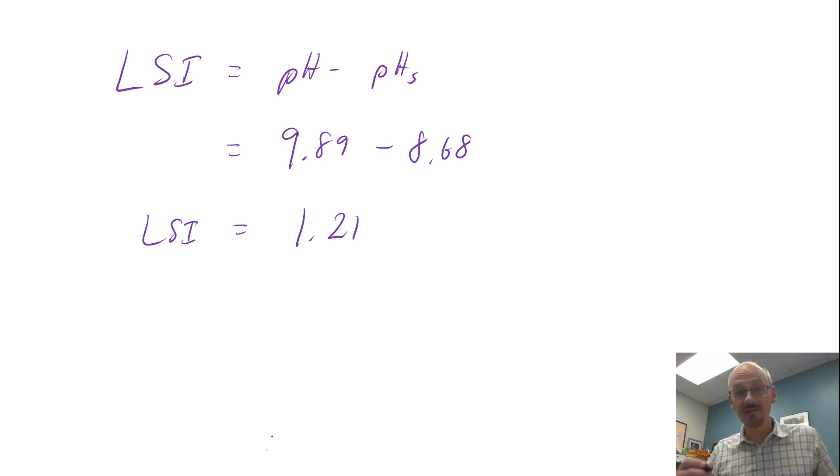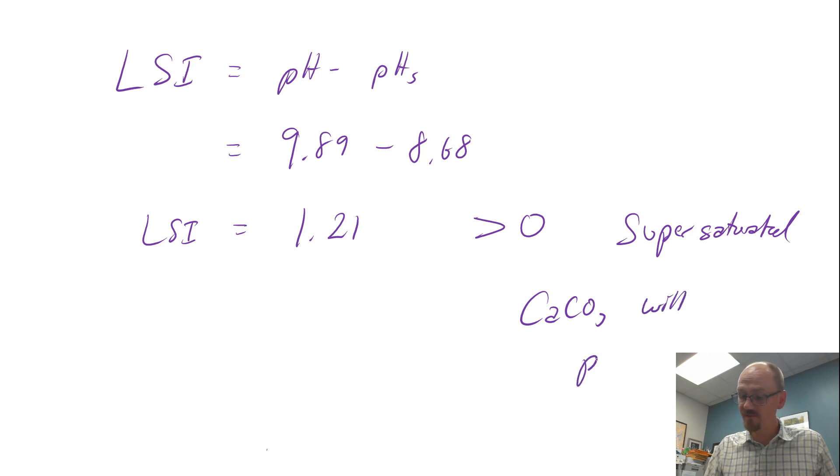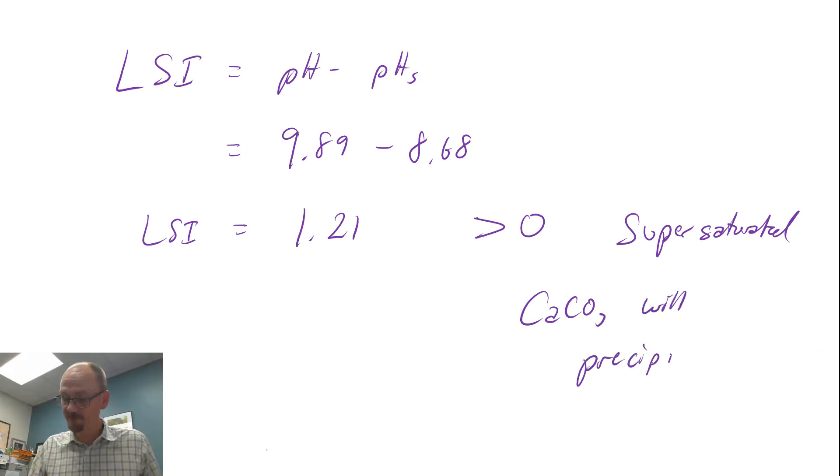When our LSI is 1.21, it is greater than zero, so that means we are super saturated. That means that calcium carbonate will precipitate. Kind of poetic - calcium carbonate will precipitate.